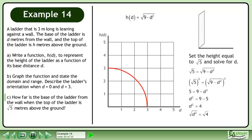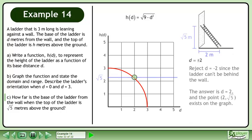Square root both sides. This gives us d equals plus minus 2. Reject d equals negative 2 since a ladder can't be behind the wall. The answer is d equals 2 and the point (2, root 5) exists on the graph.